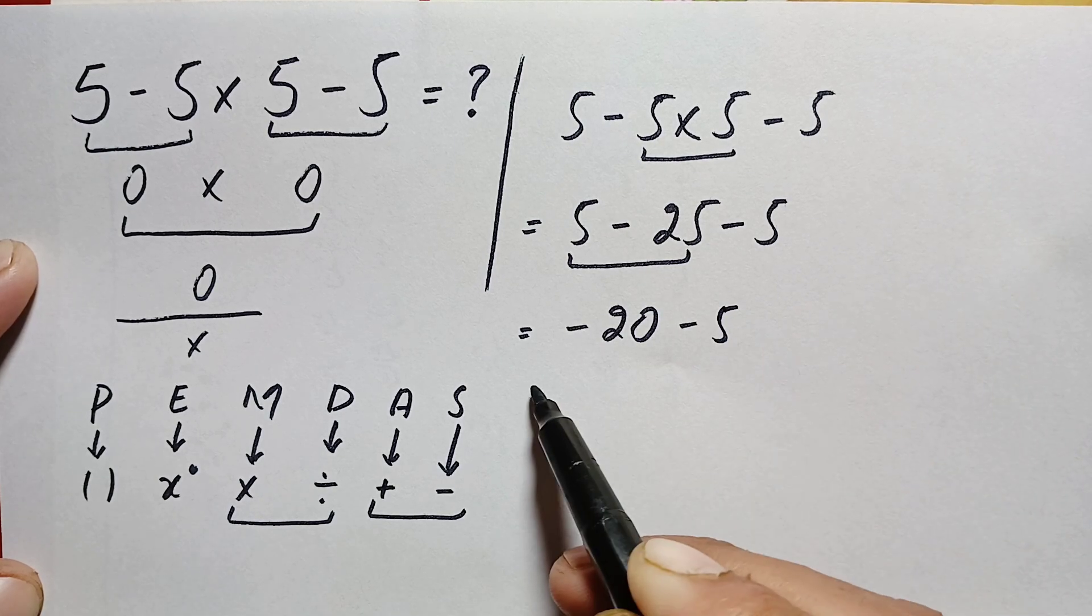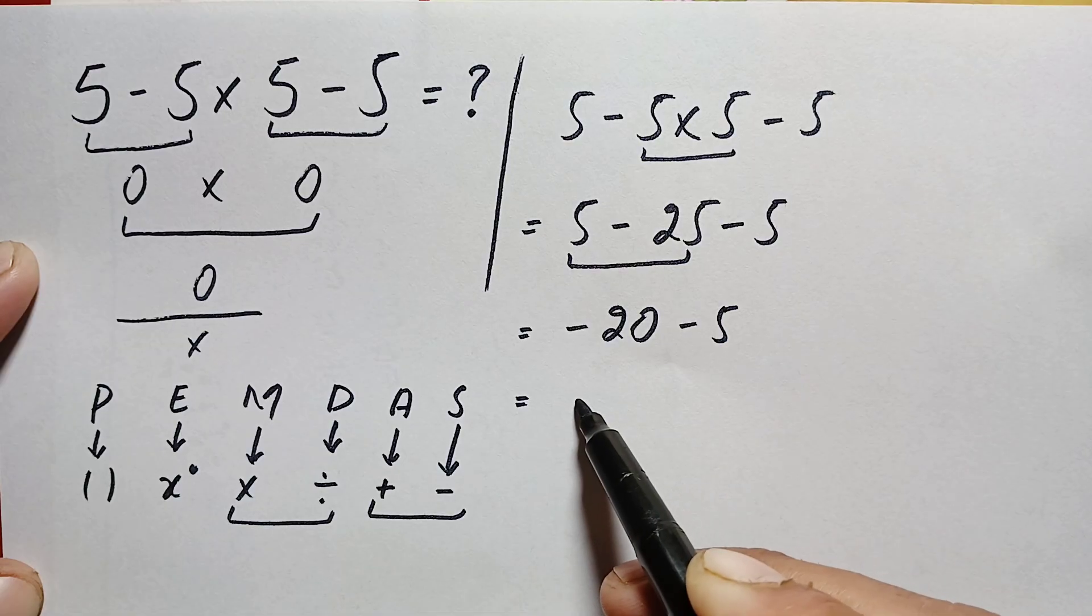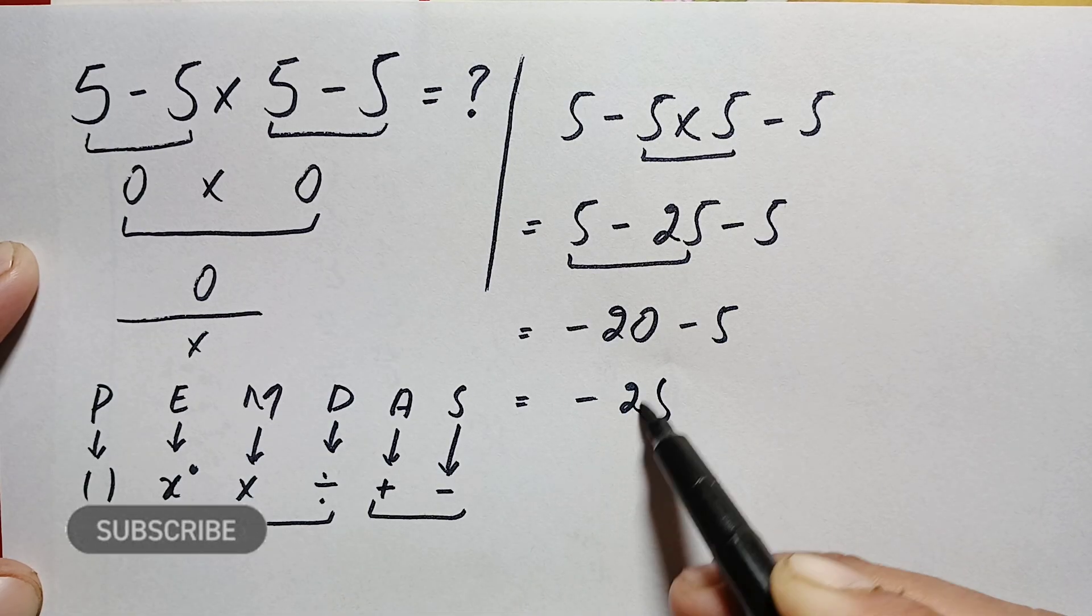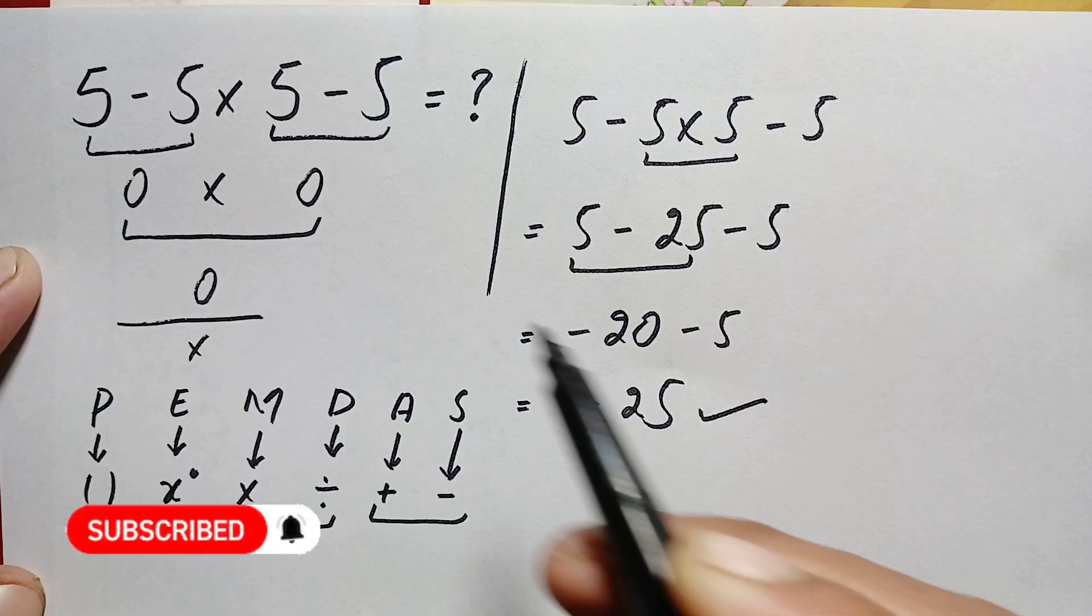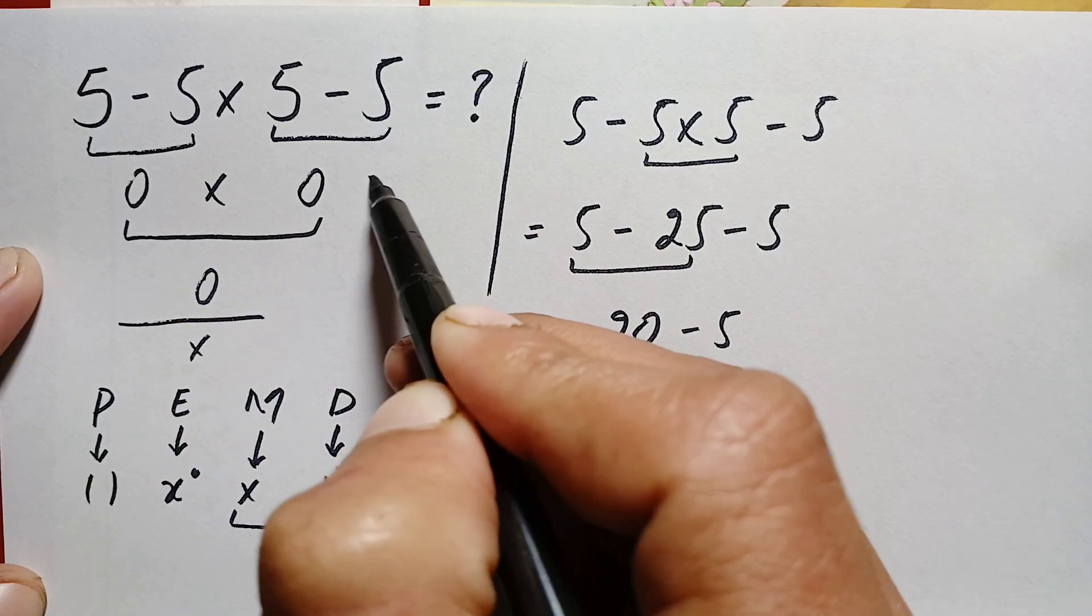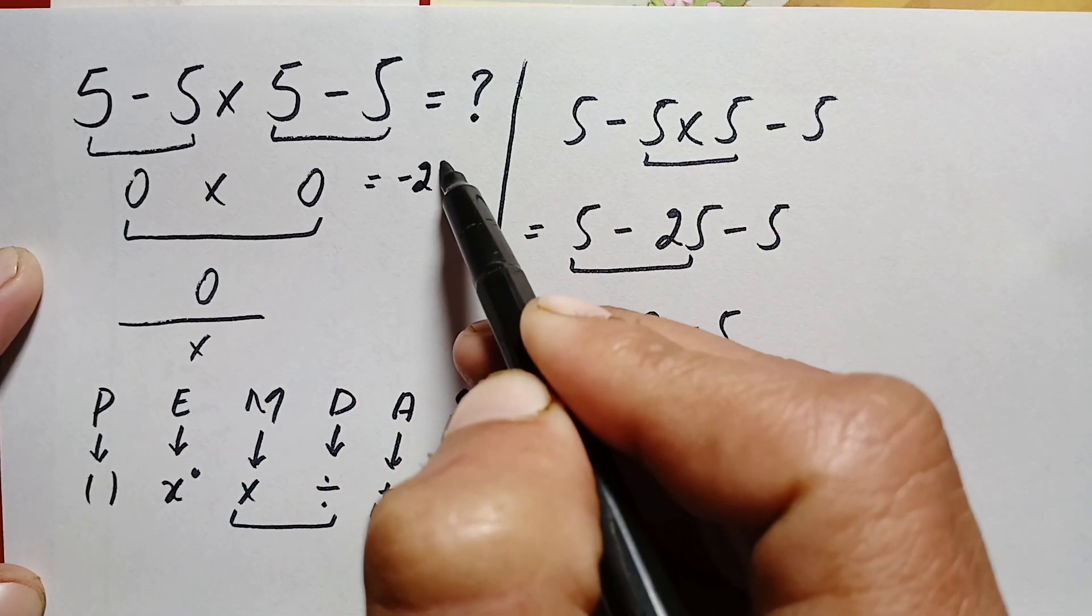Minus 20 minus 5 is simply minus 25, and that is our final answer. The value of this beautiful problem is minus 25.